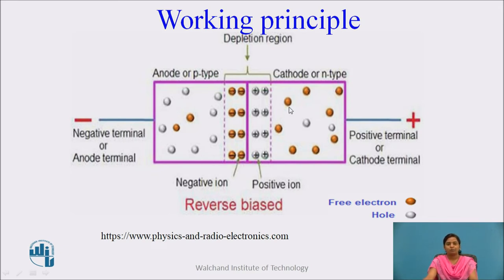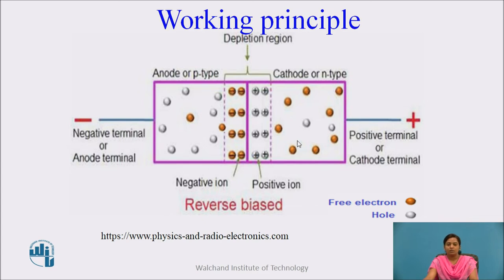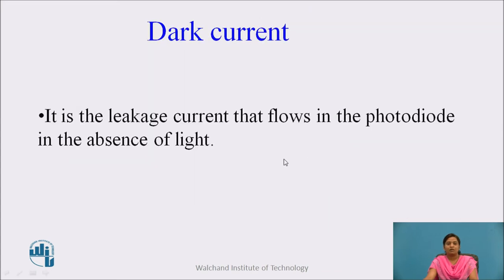The working principle of the photodiode: it works in reverse biasing mode, where the negative terminal of the external DC source is connected to the P-type semiconductor and the positive terminal is connected to the N-type semiconductor. Due to this reverse biasing, the minority charge carriers — electrons on the P side — experience a repulsive force and repel towards the junction. Similarly, the minority charge carrier holes on the N side also repel towards the junction. Due to the movement of these minority charge carriers, a very small current flows through the device, called the dark current.